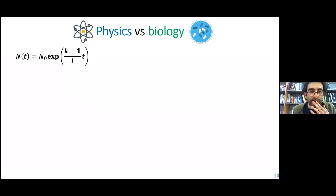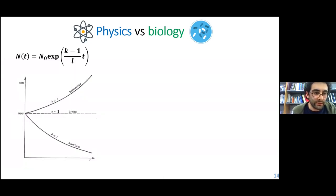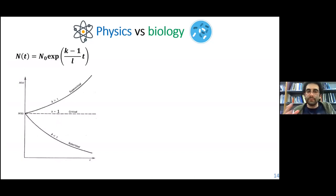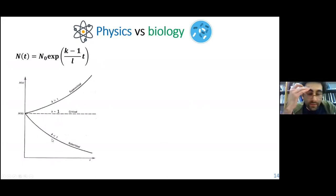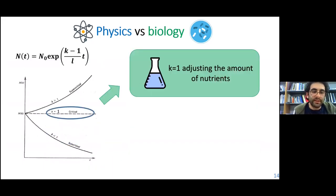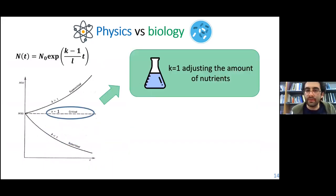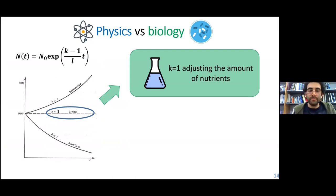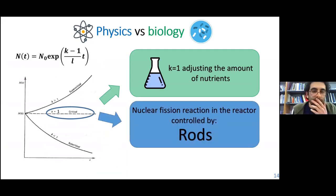Plotting this equation, we can see the critical condition where the number of neutrons before and after is the same, and then supercritical and subcritical conditions. In biology, we can play with nutrients in the medium to make k equal to 1 and keep the same number of bacteria over time. In a nuclear reactor, we can play with the rods.